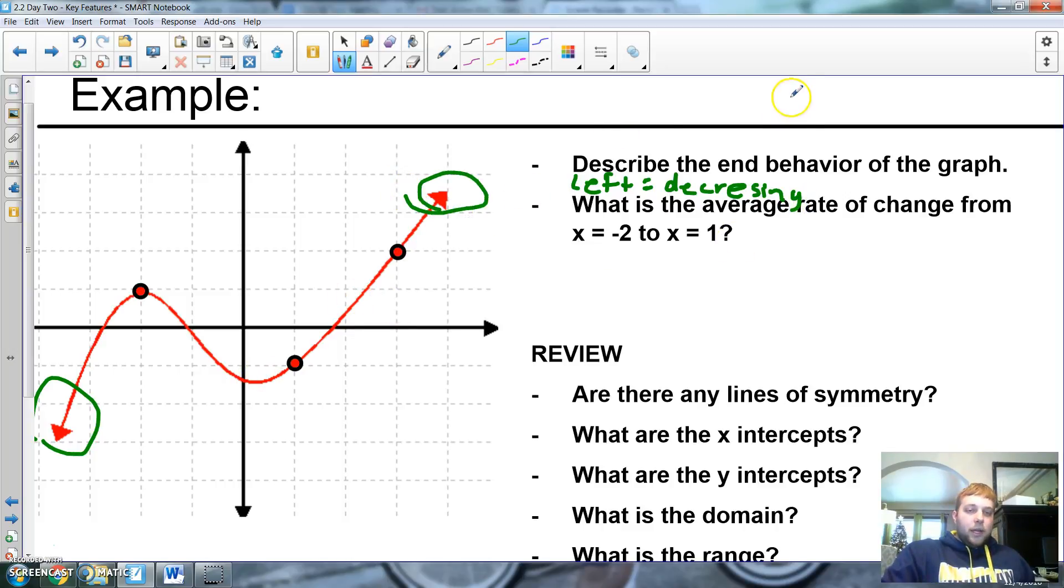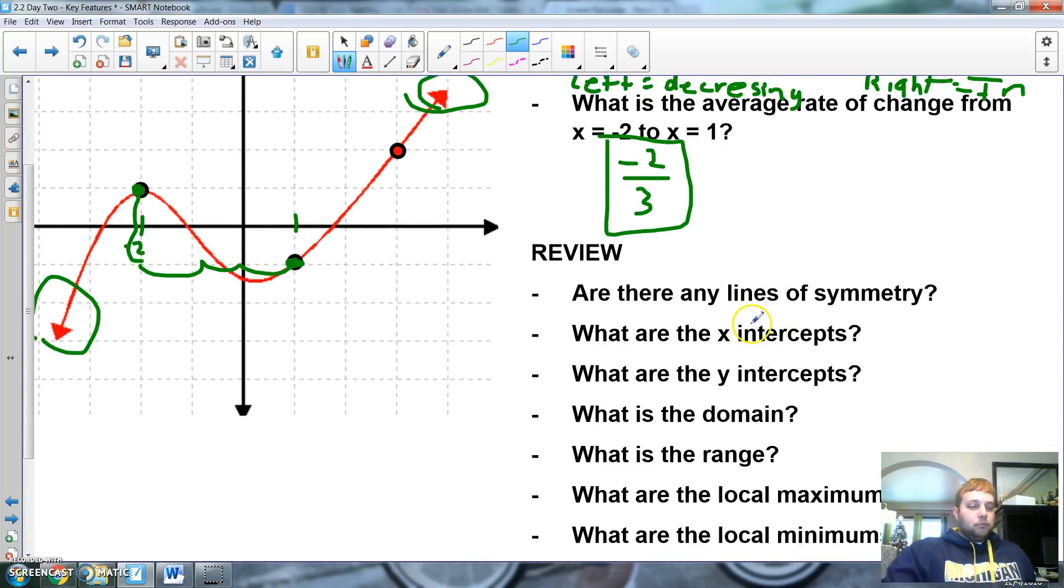On the right, it looks like it is increasing. So, decreasing on the left, increasing on the right. What is the average rate of change from x is negative two? So, that would be here. An average rate of change is negative two over three. Are there any lines that are symmetrical? Nope. Let's go.